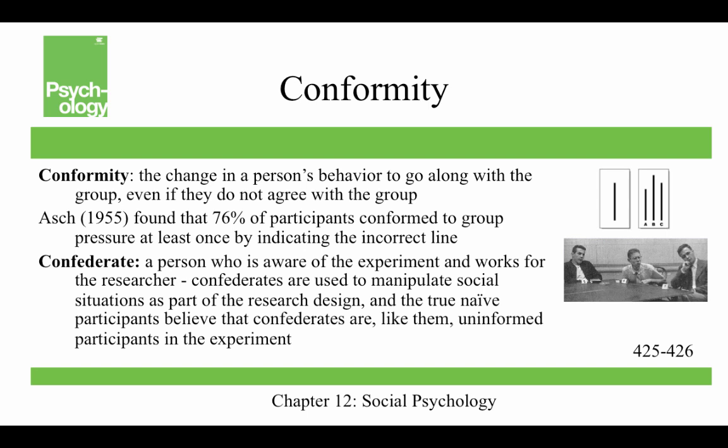Conformity is the change in a person's behavior to go along with the group, even if they do not agree with the group. Solomon Asch, in the 1950s, found that 76% of participants conformed to group pressure at least once by indicating the incorrect line. A confederate is a person who is aware of the experiment and works for the researcher; confederates are used to manipulate social situations, while true naive participants believe the confederates are uninformed participants like themselves. The Asch effect is the influence of the group majority on an individual's judgment.